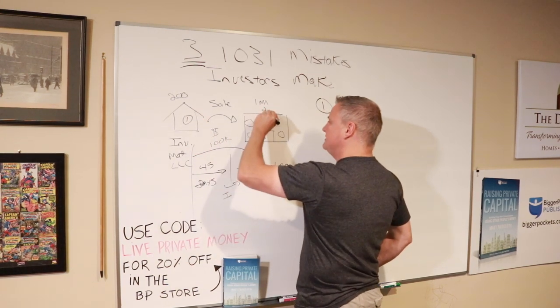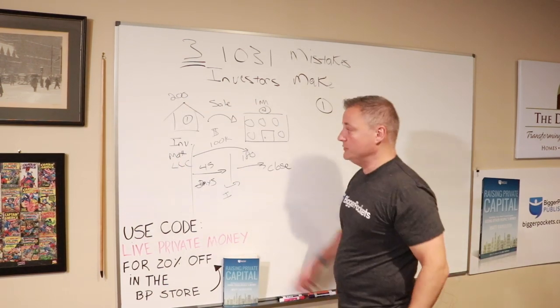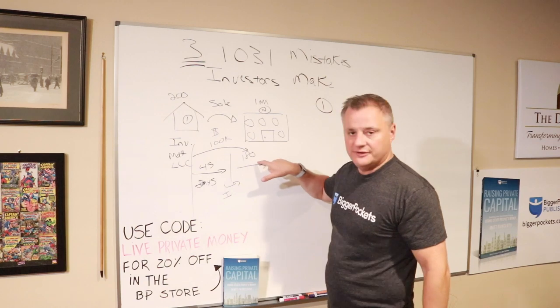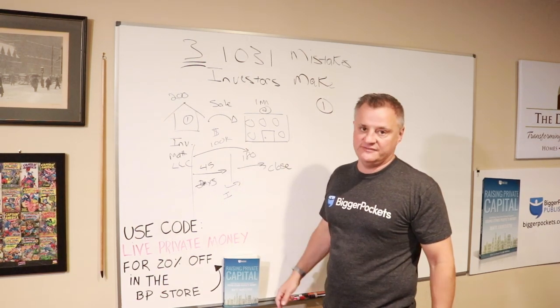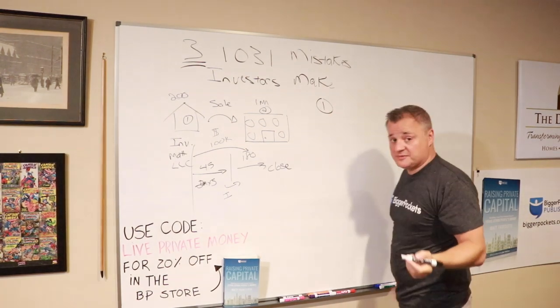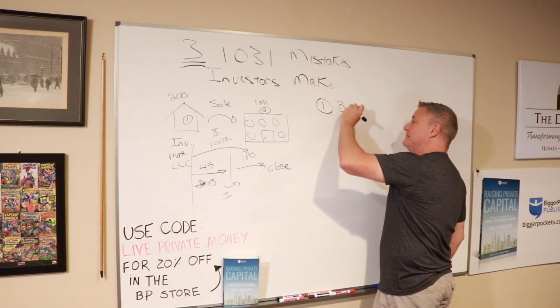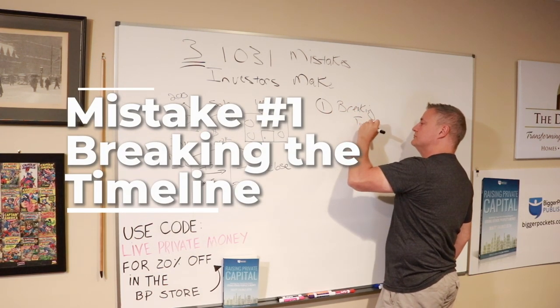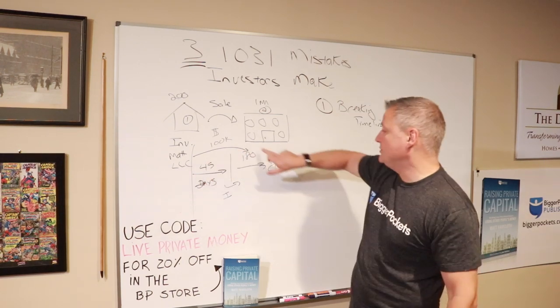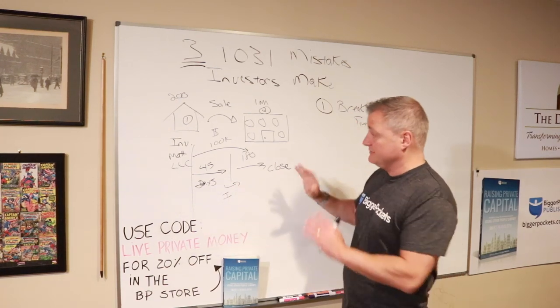When I sell property one, the day of closing, I now have 180 days before I have to close on property two or I lose this. There is no extensions. There is no way to work around it. You gotta close on this within 180 days or you lose that tax advantage. If you mess up this timeline, it's because you didn't clearly understand it or you didn't clearly plan for it.